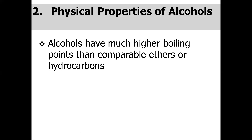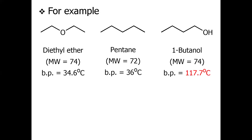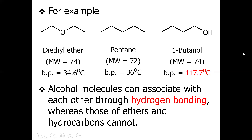Regarding physical properties, alcohols have a high boiling point compared to ethers and hydrocarbons. For example, comparing similar molecular masses: 1-butanol has a boiling point of 117.7°C due to hydrogen bonding, while diethyl ether and pentane — of similar molecular mass — lack hydrogen bonding and therefore have much lower boiling points.